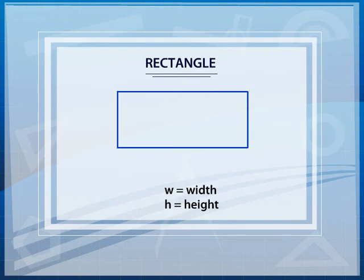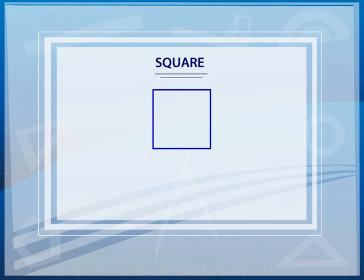The area of a rectangle is the width times the height. The area of square is the side length squared.